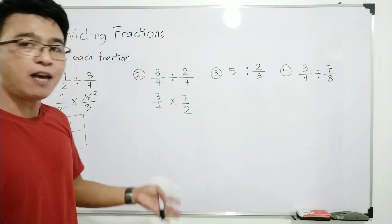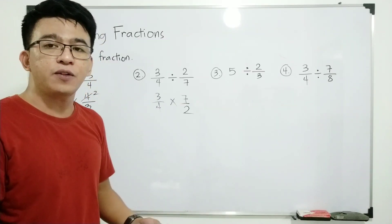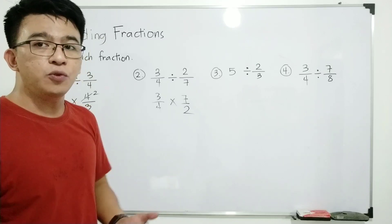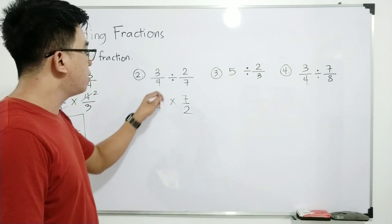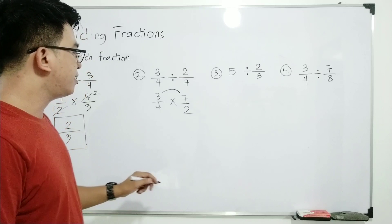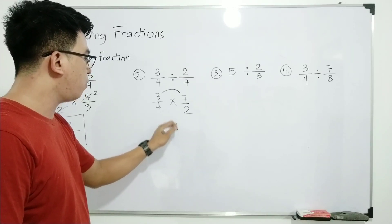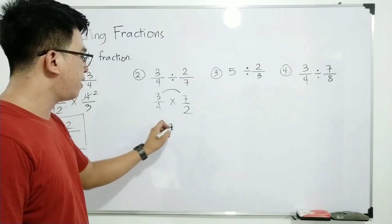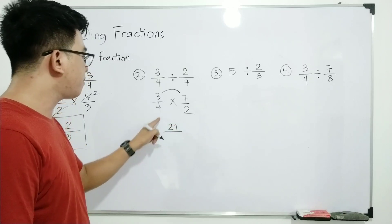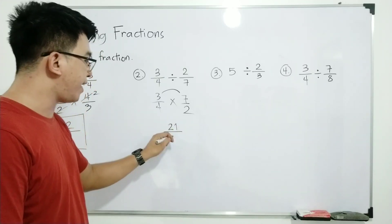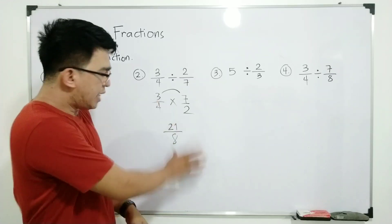There's nothing we can cancel out here, so we'll use the classical way to multiply the fraction. Three times seven is twenty-one, over four times two which is eight.